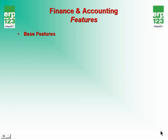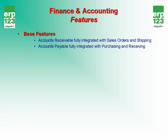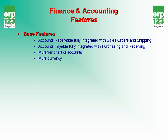Base system features include an accounts receivable system that's fully integrated with your sales order and shipping modules. The accounts payable system is fully integrated with the purchase order and purchase order receiving modules. You have a multi-tiered chart of accounts for your general ledger and multi-currency capability with effective dates that allow you to set currency rates based on certain time periods.